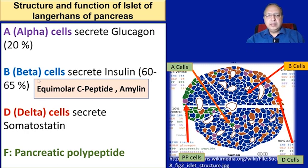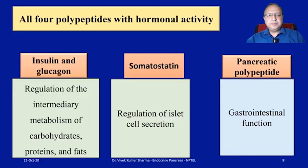Alpha cells that secrete glucagon are roughly 20%. Beta cells that secrete insulin are 60 to 65%, and there is also equimolar synthesis and secretion of C peptide, and secretion of amylin. D cells secrete somatostatin. Somatostatin, the inhibitory hormone, is involved in the regulation of islet cell secretion. Pancreatic polypeptide is involved in GI function, though its exact function is still unknown.